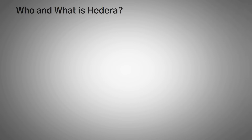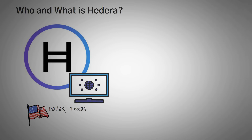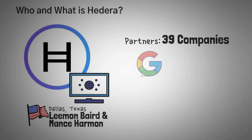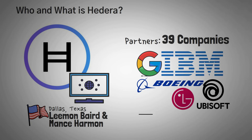Hedera Hashgraph is a company based in Dallas, Texas, founded by the inventor of the Hashgraph technology, Lehman Baird, and his business partner Mance Harmond. Hedera is technically owned by 39 entities, of which you might recognize Google, Boeing, IBM, LG, and Ubisoft, among others. The board of directors and management team are all doxxed — meaning you can find out all kinds of information about them; they're not anonymous.